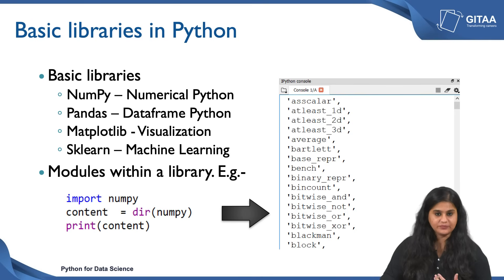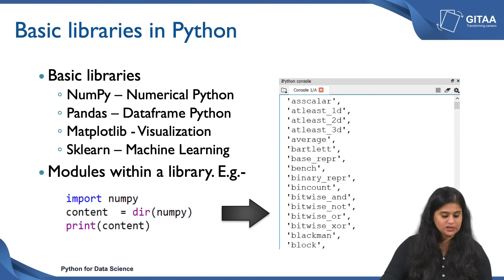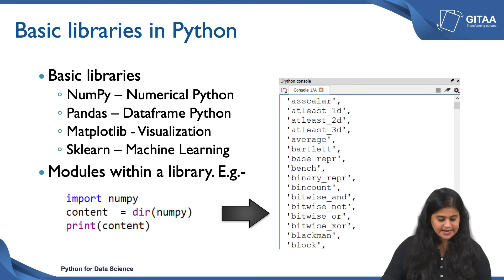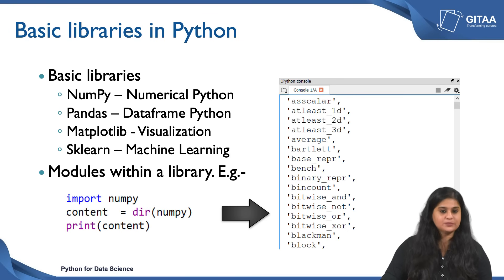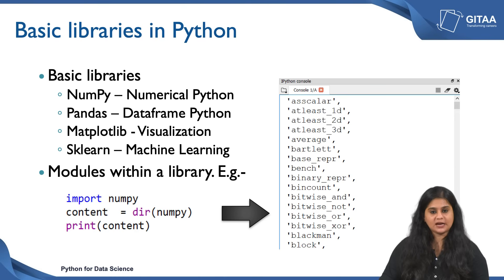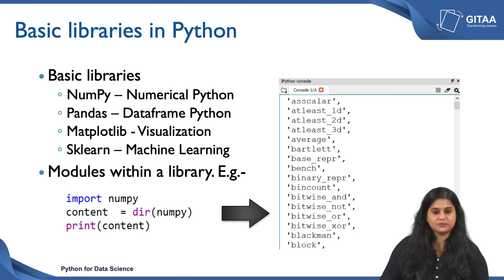These are parent libraries and there are also sub libraries contained within these. To access the contents of a library you need to first import the library. In this case I am importing numpy. Dir represents directory — this is the directory of the library, in this case numpy. I am saving the entire directory to a variable called content and printing it. Once you run these three lines of code on your console, all the sub libraries will be printed — this is one way to access the sub library. However, this is a little tedious because you have to skim through all the sub libraries and your console gets overpopulated.